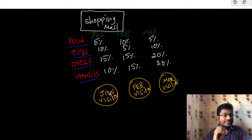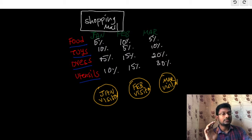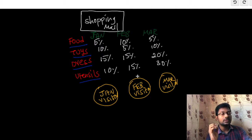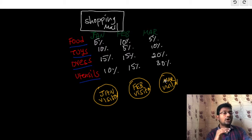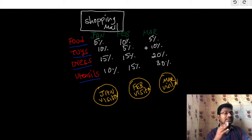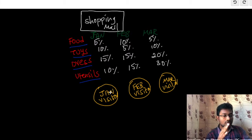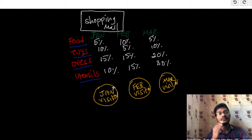If the January visitor receives food, toys, dress, or utensils as elements, then it determines the tax percentage for that month. Then the February visitor visits food, toys, dress, and utensils and determines the tax percentage. Similarly, the March visitor visits those elements and determines the tax percentage for that month. So here this visitor is playing a major role — it determines the tax percentage for the elements based on various criteria.